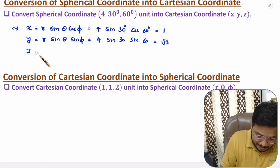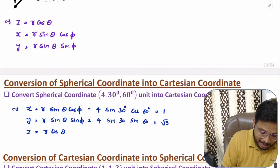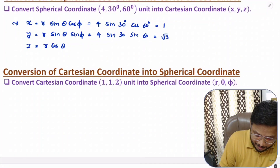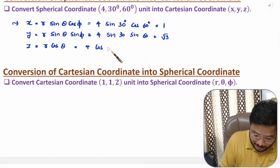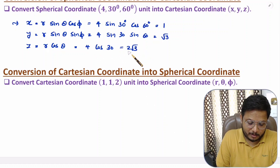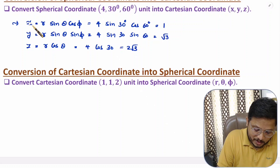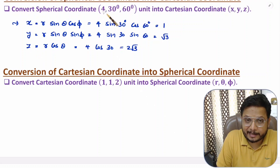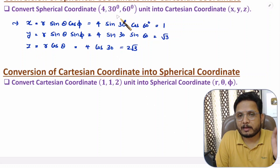For Z, that is R cos theta, which is 4 times cos 30°. Cos 30° is √3/2, so Z equals 2√3. So we now have X, Y, Z from the R, theta, phi coordinates.